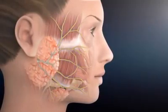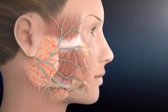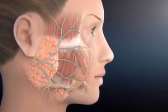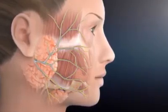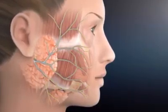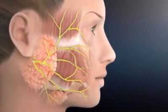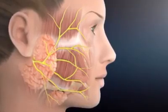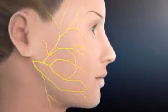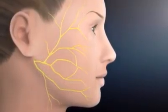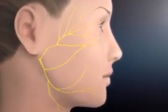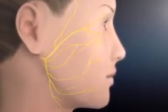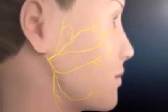Once the facial nerve enters the parotid gland, it generally divides into two main branches called upper and lower divisions, and then into five other branches, which then subdivide into many smaller branches that connect to the facial muscles. Facial nerve branching is like a tree in that no two facial nerve branching systems are the same, and great expertise is required to be able to dissect the nerve, find all the branches and protect them.